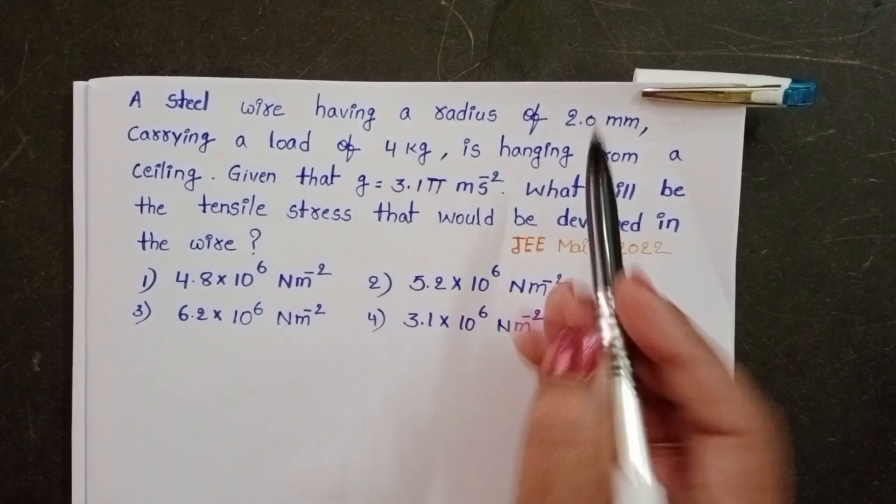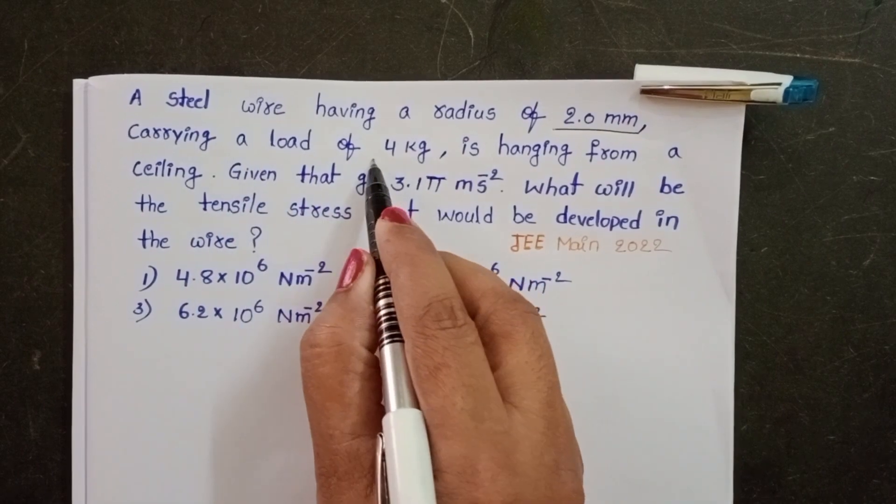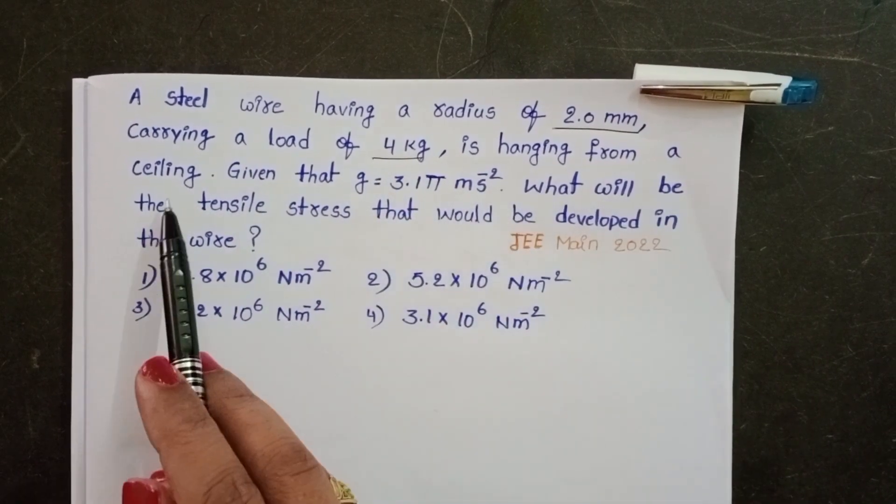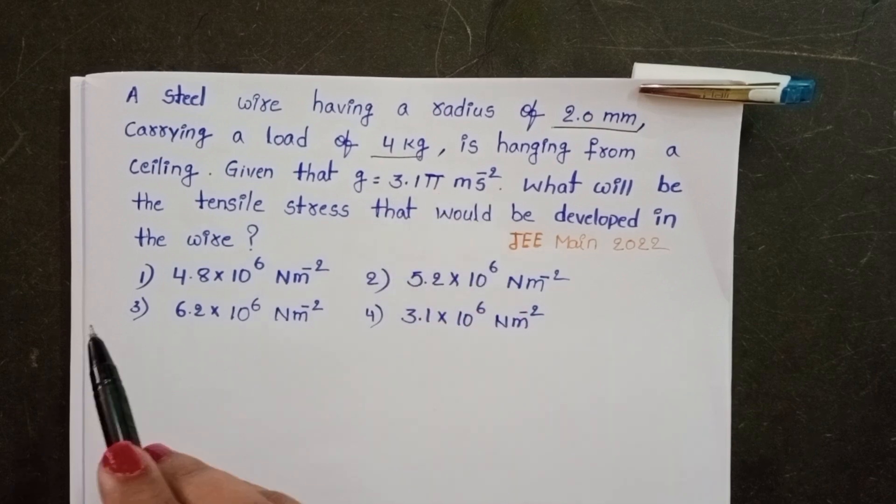A steel wire having radius 2 mm, carrying a load of 4 kg is hanging from a ceiling. G value is 3.1 into pi meter per second square.